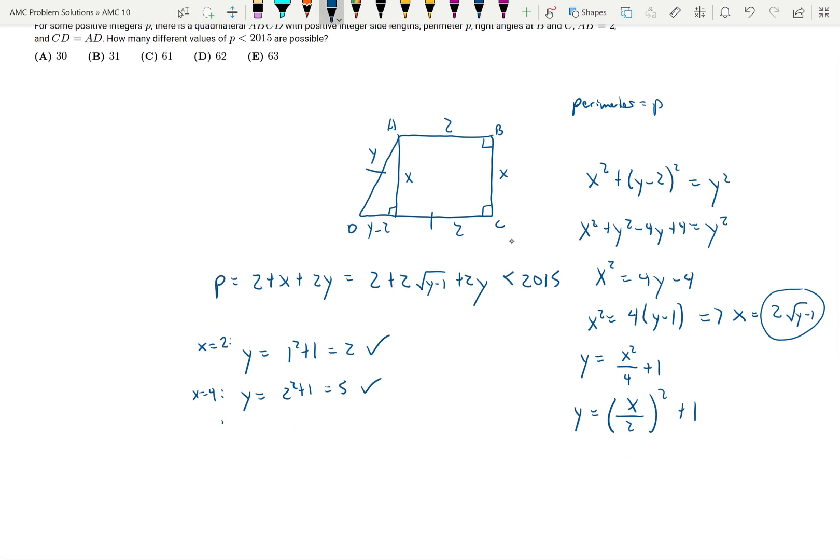So I'm going to keep doing this until we consider when X is equal to 62. So in that case, Y is going to be equal to 31 squared plus 1. So 31 squared plus 1 is equal to 962. And so when we plug in 962 up there, we're going to get 2 plus 2 times square root of 961 plus 2 times 962. And so doing that out, we get 1986. So that works.